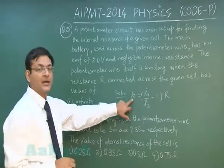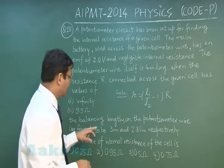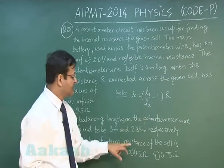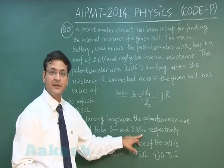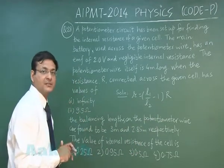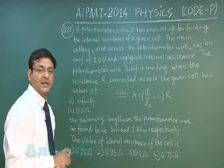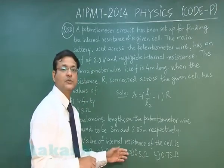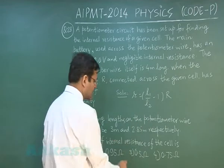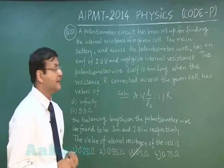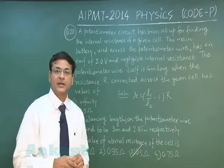You have to find out small r. The larger length happens to be l1, that has been given to you here: 3 meter. And the smaller length l2, that is equal to 2.85. This capital R is nothing but this 9.5 ohm that has been given. Rest of the data is immaterial. If you solve it, you will find that you are getting the value 0.5 ohm. The answer to this question will be option number 3, and that explains question number 28.